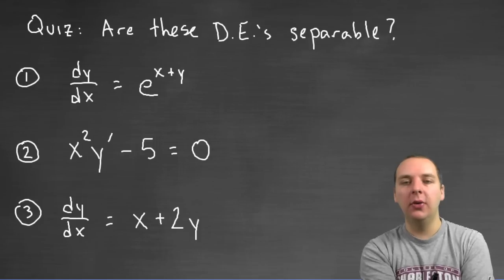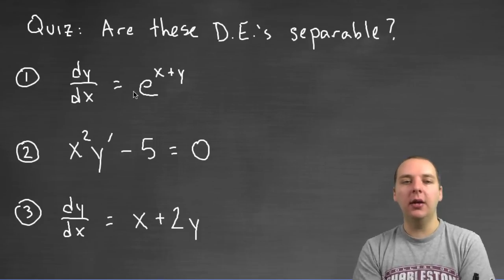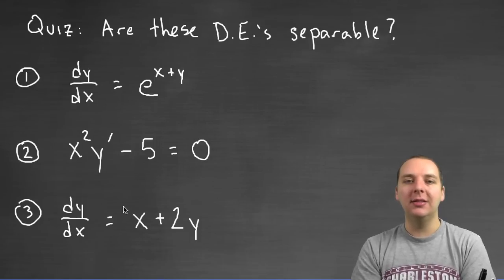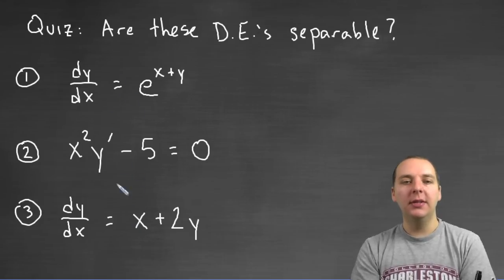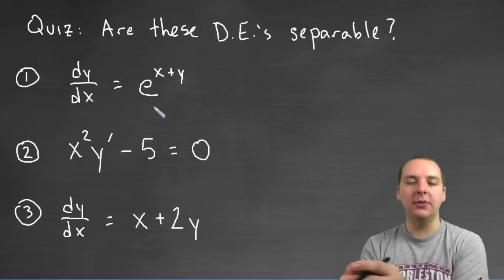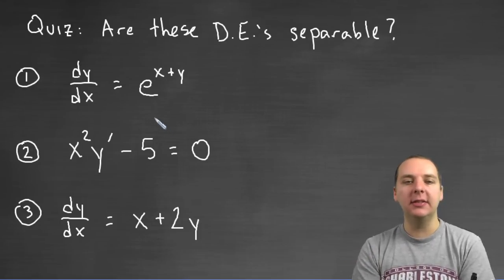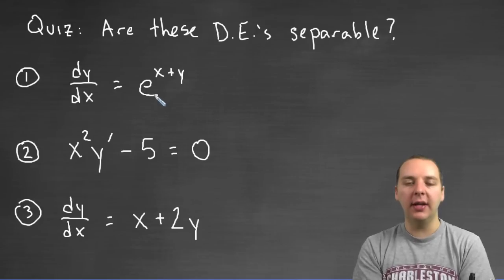So anyways, what I want to leave you with in this video is just a short quiz. Now we're not going to work these out in this video, but I want you to jot these down and then we'll actually work them out in the next video here. But I'm giving you a sneak peek, this is what's going to be covered in the next video. So my question is, are these three separable? Is there some algebra you can do to write these guys once you've solved for dy/dx as a function of X times a function of Y? And it's not quite as easy as it sounds. Some of these are a little tricky, so take it slow, do it carefully, and I'll give you the answers in the next video.